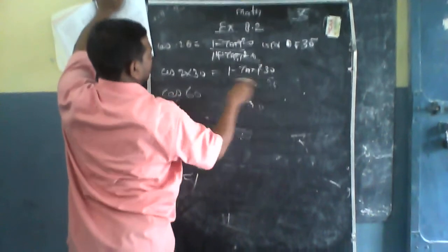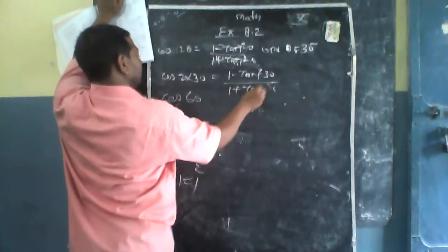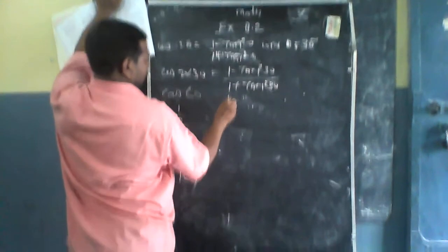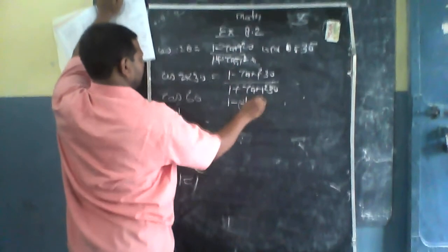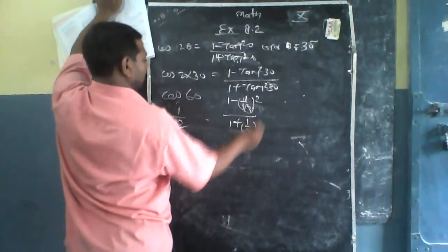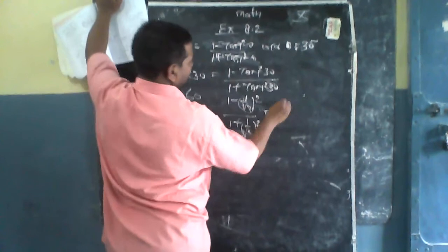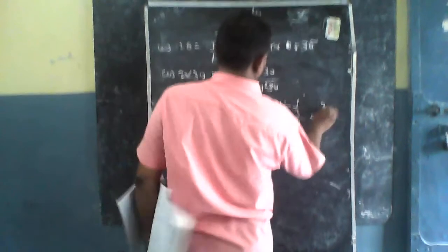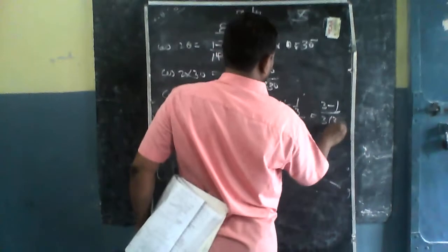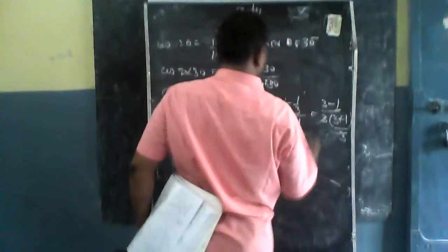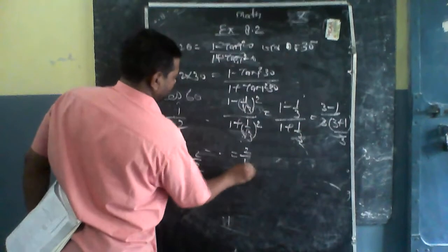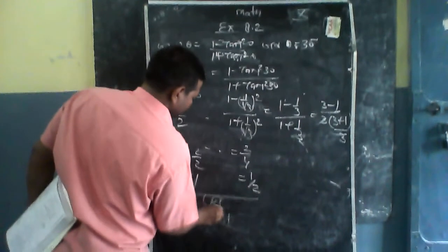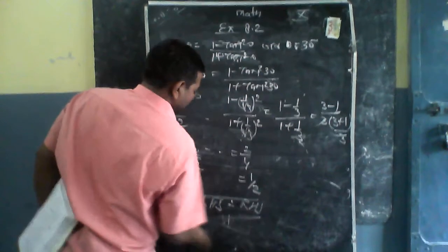Value रखिएंगे: 1 - (1/√3)² / (1 + (1/√3)²)। Solve करेंगे: 1 - 1/3 / (1 + 1/3) = (3-1)/3 / (3+1)/3। 3 काट दिया — आगे 2/4, फिर कट करके 1/2 आया। LHS = RHS, यह आपका proof हो गया।